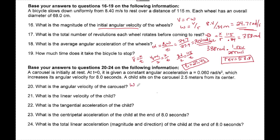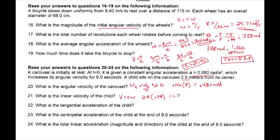Number 20 uses omega final equals omega initial plus alpha t. Starting from rest, omega initial is zero, so alpha times t gives omega: 0.06 times 8 seconds equals 0.48 rads per second. Linear speed V equals r times omega: 2.5 times 0.48 equals 1.2 meters per second. Tangential acceleration A equals r times alpha: 2.5 times 0.06 equals 0.15 meters per second squared.